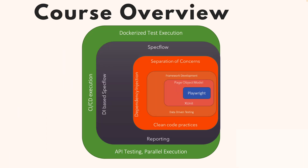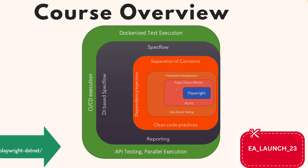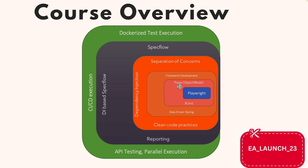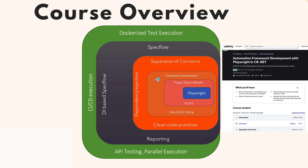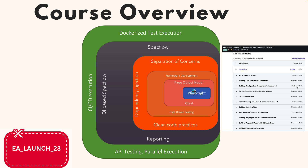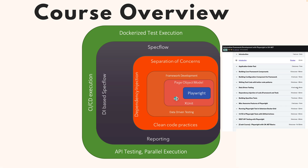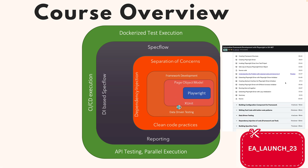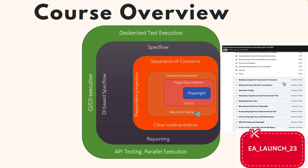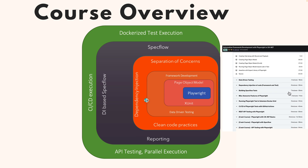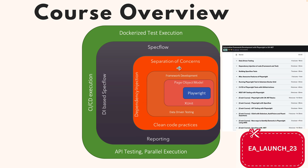Since this course is all about Playwright, we are going to talk in a lot more detail by building tests on top of Playwright using the Page Object Model, as well as building a robust framework. We'll be performing operations in the test by running them using the xUnit test runner and performing data-driven testing. We'll also be applying clean coding practices across the codebase by writing dependency injection and understanding the purpose of separation of concerns.